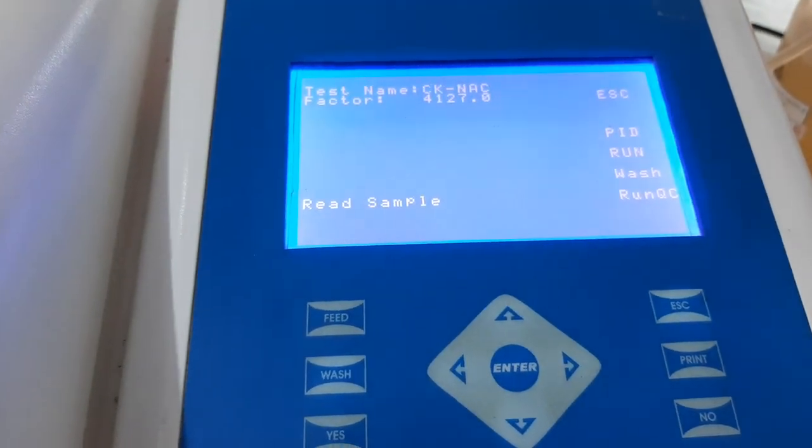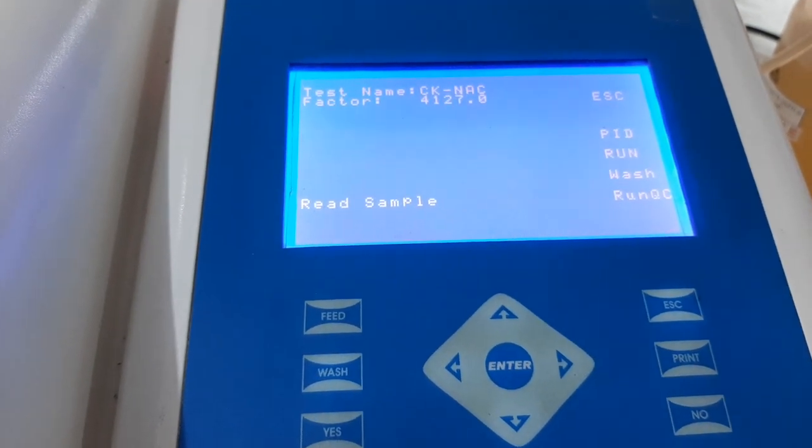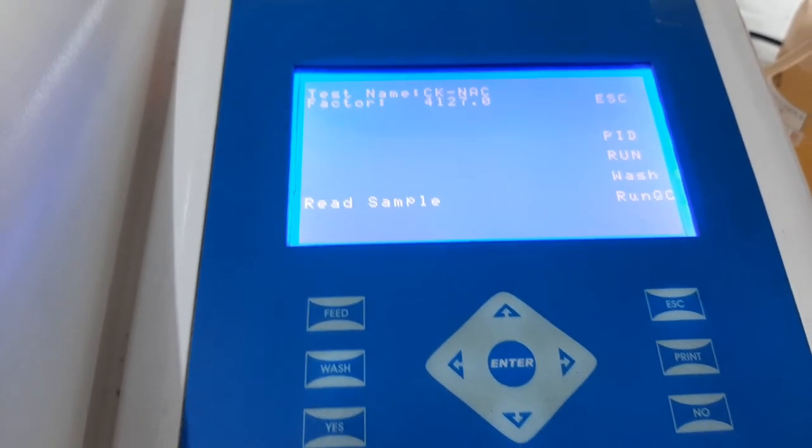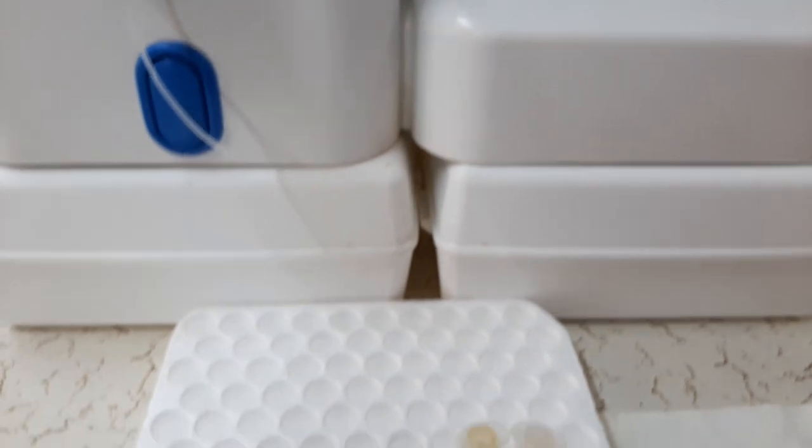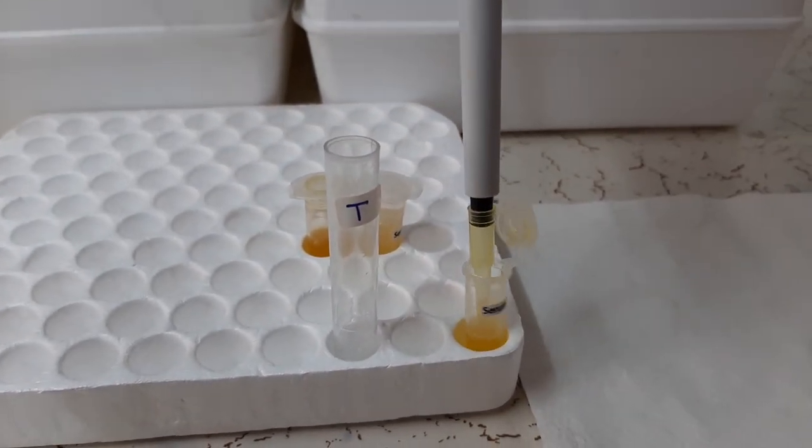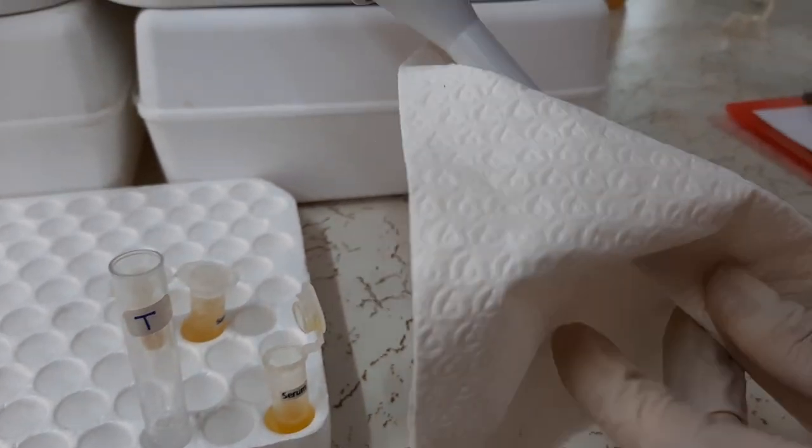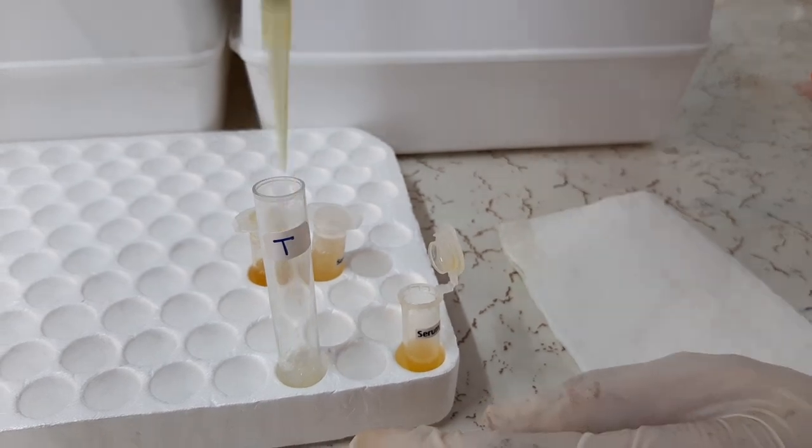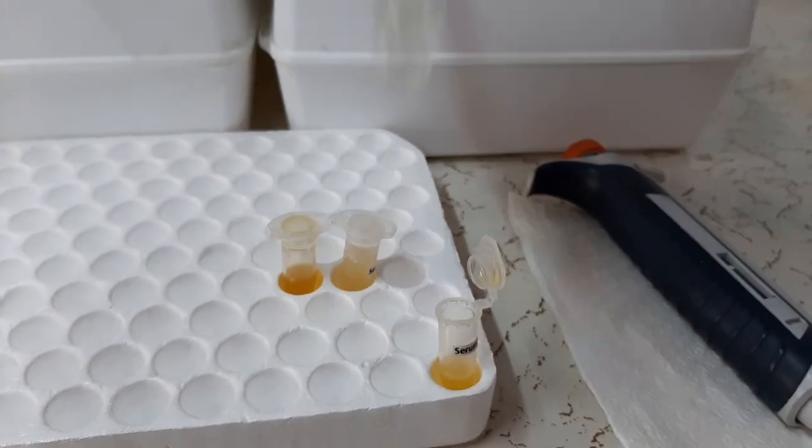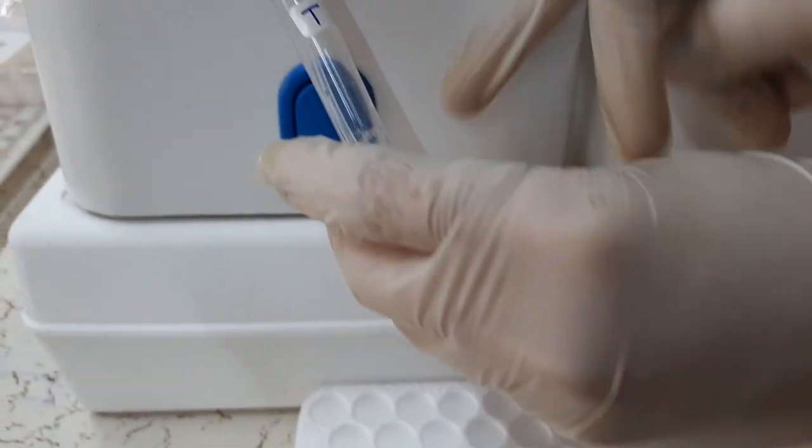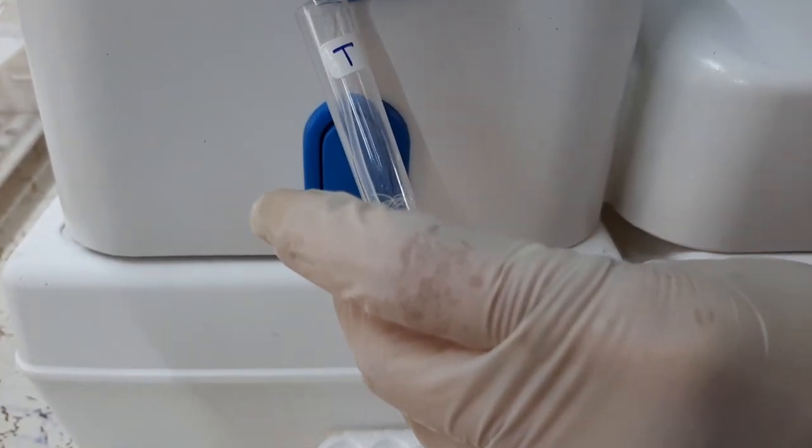So now what we need to do is add the sample as the program is giving the message to read the sample. To do this, we will aspirate 40 microliters of patient sample and then wipe the outside of the tip using tissue paper. And add the sample into the working solution previously prepared. Mix it well and then aspirate the reaction mixture into the flow cell.